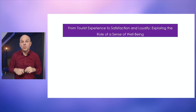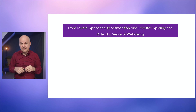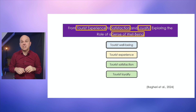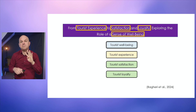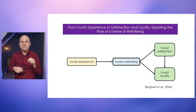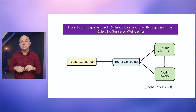The quantitative conceptual framework example comes from an article entitled 'From Tourist Experience to Satisfaction and Loyalty: Exploring the Role of a Sense of Well-Being.' From the title we sense that the core concept is a sense of well-being, but there are other concepts — tourist experience, tourist satisfaction, and tourist loyalty. So we can identify four concepts being considered by this research. Delving deeper into the abstract and full paper, we see the relationships: tourist well-being as the core element, with tourist satisfaction and tourist loyalty as consequences, and tourist experience as an antecedent.